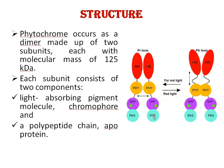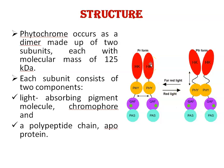Apoprotein and chromophore together make up the holoprotein. This is the PR form of phytochrome and this is the PFR form of phytochrome. This is the C-terminal regulatory histidine kinase region, the HKY region. And this is the N-terminal photosensory region with three conserved domains: PAS, GAF, and PHY.